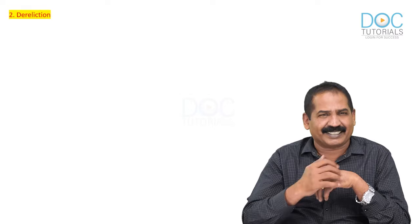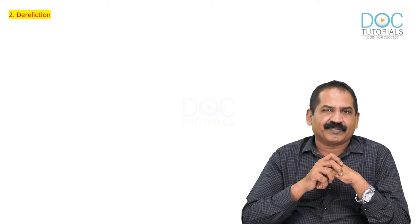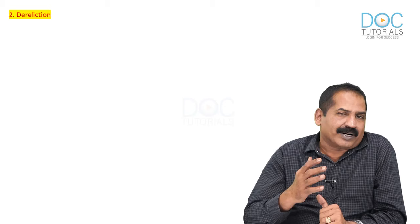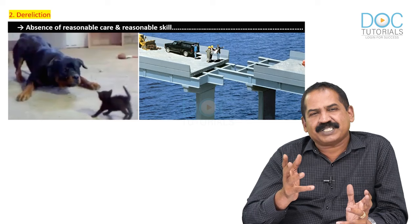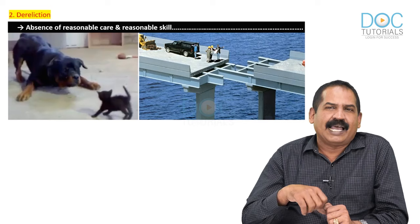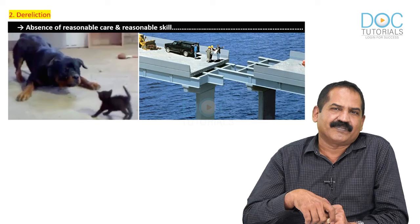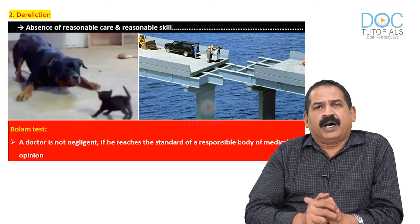The second element or ingredient is dereliction. Dereliction means negligence or carelessness — in other words, the absence of reasonable care and reasonable skill.